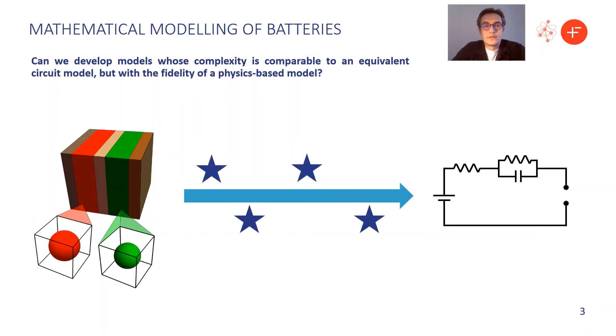So once we've got this physics-based model shown here on the left, we want to see if we can develop something that's simpler. Really what we want is some model that's got complexity comparable to an equivalent circuit model, but has the fidelity of a physics-based model. These stars on this arrow represent a whole range of models that we might like to try and develop.